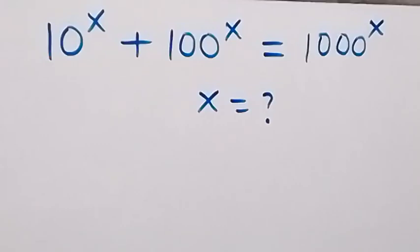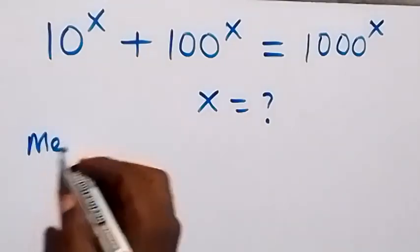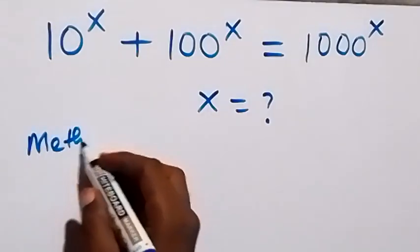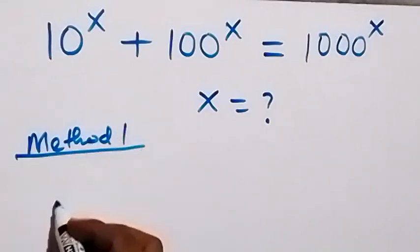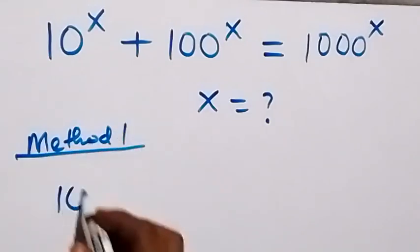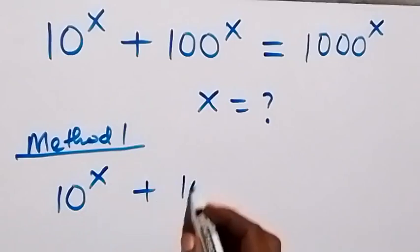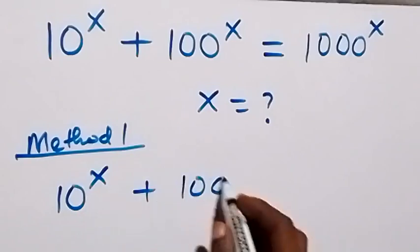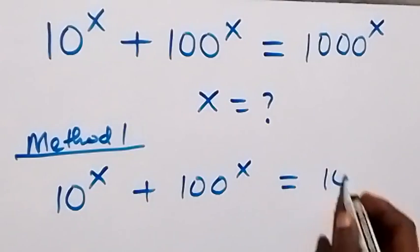Hello, you are welcome. How to solve this nice exponential equation. Let's use the first method — Method 1. From what is given, which is 10 raised to power x plus 100 raised to power x equals to 1000 raised to power x.